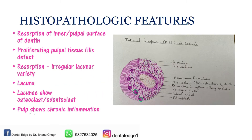The last histopathologic feature is that the pulp shows chronic inflammation. To summarize what can be seen in the image: this is the pulp, this is the dentine, this is the pulpal surface of dentine, this is the pre-dentine, and here the resorption is taking place in a lacunar pattern. These lacunae are occupied by odontoclasts, and the pulp shows inflammation with presence of inflammatory cells and haematoma formation.